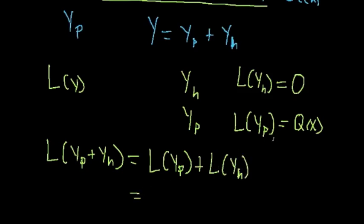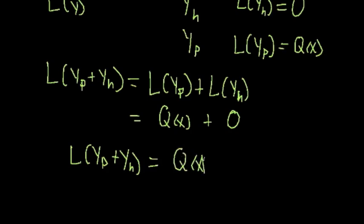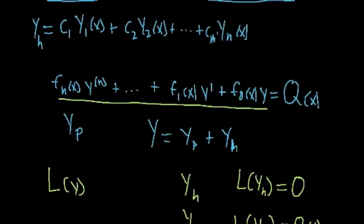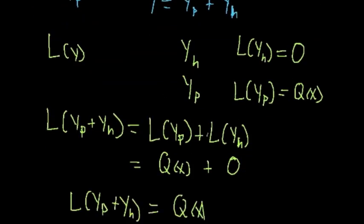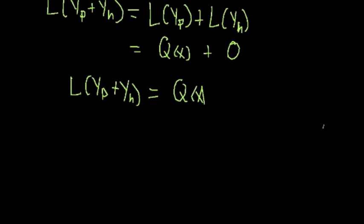We know that equals q(x) + 0, which means L(y_p + y_h) = q(x). So y_p + y_h is also a solution to the non-homogeneous equation. The reason is that the homogeneous solution doesn't contribute anything to the right-hand side — we can always add y_h because it contributes zero. That may be a bit abstract, so let's do an example.